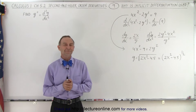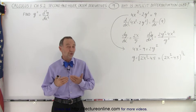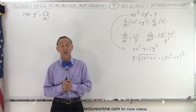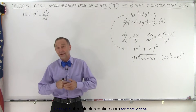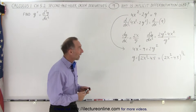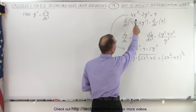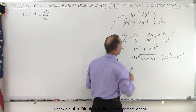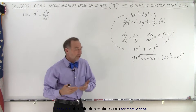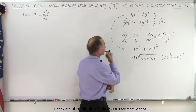Welcome to Y Lecture Online. In the last couple of videos we showed you a technique called implicit differentiation to find the first and second derivative of a particular function. The function was 4x squared minus 2y squared equals 9, and we were supposed to find the first and second derivative with respect to x.